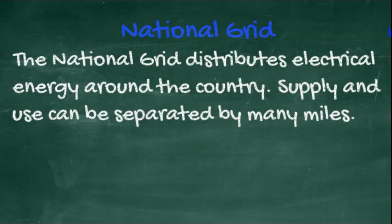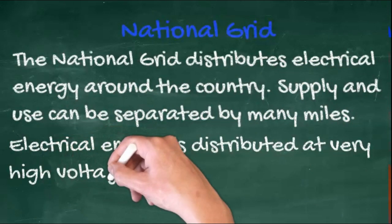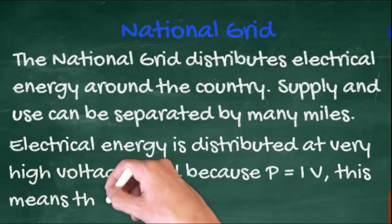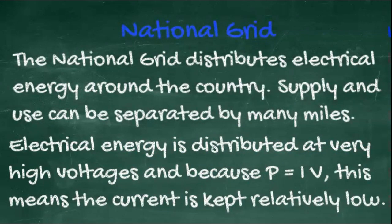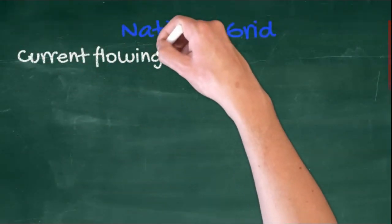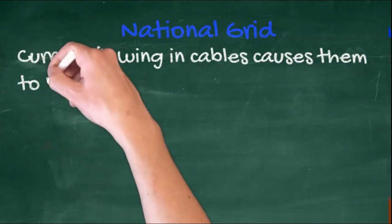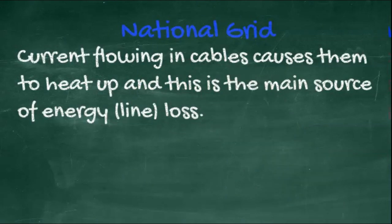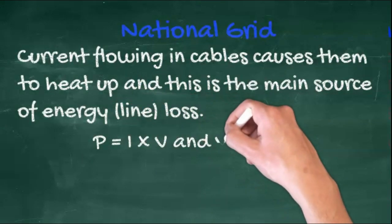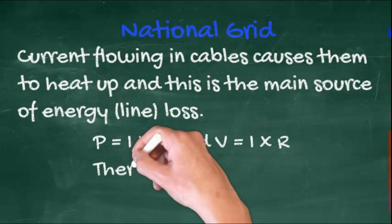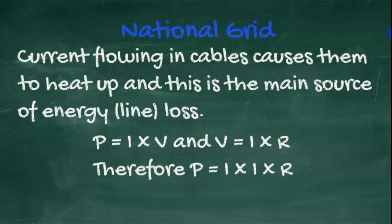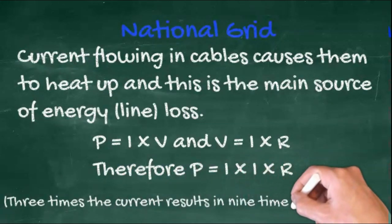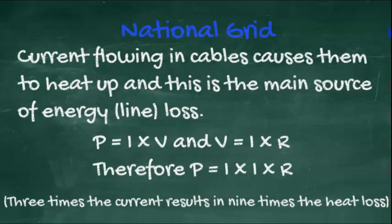The national grid distributes electrical energy all around the country. Supply and use can be separated by many miles. Electrical energy is distributed at very high voltages, and because p equals IV, this means the current is kept relatively low. Current flowing in cables causes them to heat up, and this is the main source of line loss. Power is amps times volts, and V equals IR, therefore power is amps times amps times resistance, in other words, p equals I squared R. So three times the current results in nine times the power loss.